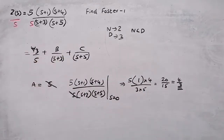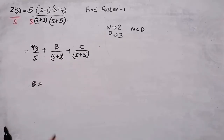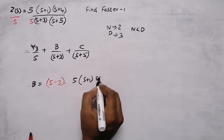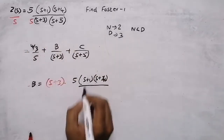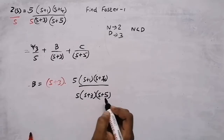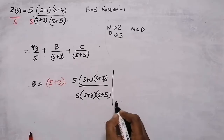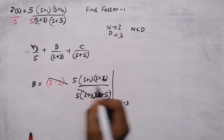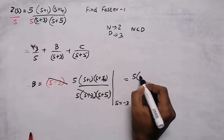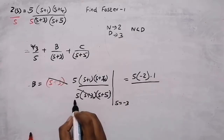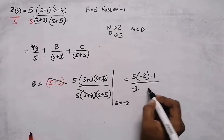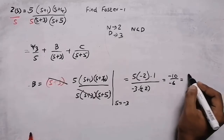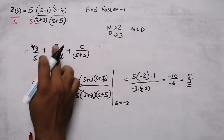For finding B, multiply by s plus 3 and evaluate at s equals minus 3: 5 times minus 3 plus 1 times minus 3 plus 4, divided by minus 3 times minus 3 plus 5. That gives 5 times minus 2 times 1, divided by minus 3 times 2, which is minus 10 over minus 6, giving B equals 5 by 3.